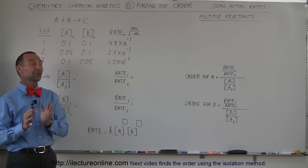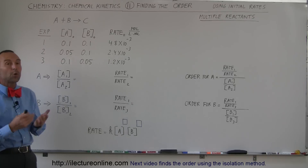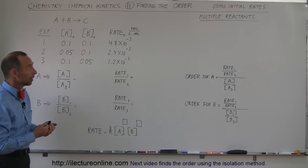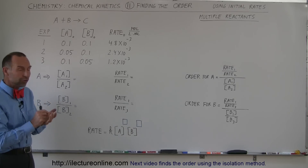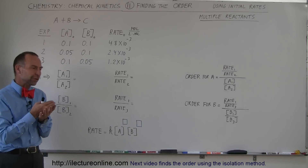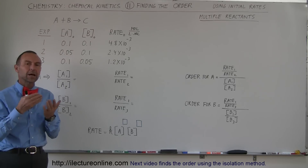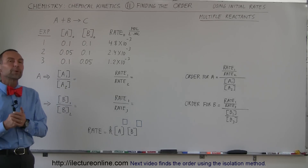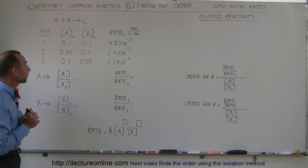Welcome to ElectronLine. Here's another method on how we can find the order of the reactants — or the concentration of the reactants — using initial rates, just like we did in the previous video to find the rate constant. This will work for multiple reactants, and we'll see how to do that here.